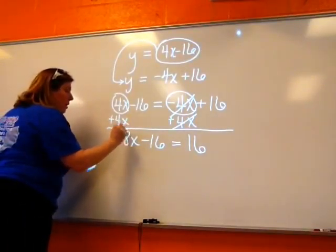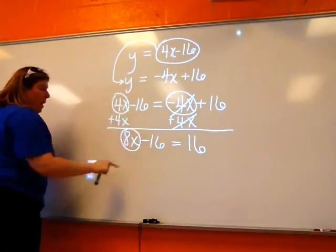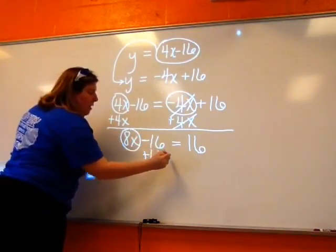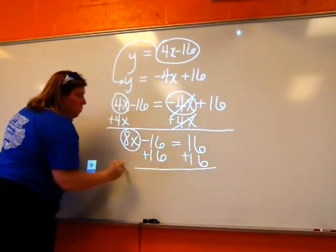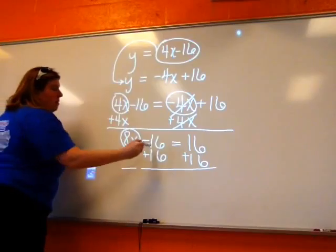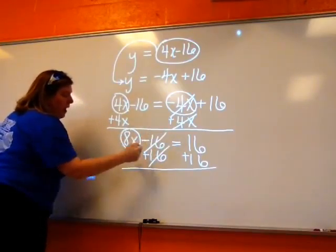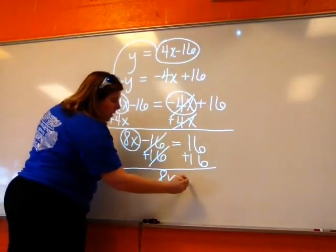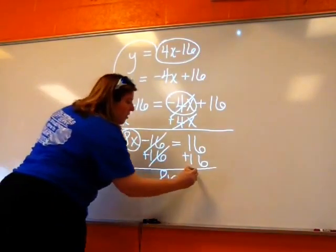Now, I'm going to solve for my X. So there's my X, which means this minus 16 has to go. So I'm going to add 16 to both sides. Here's my 8X. Those are going to cancel. So 8X is going to equal 16 plus 16, which is 32.